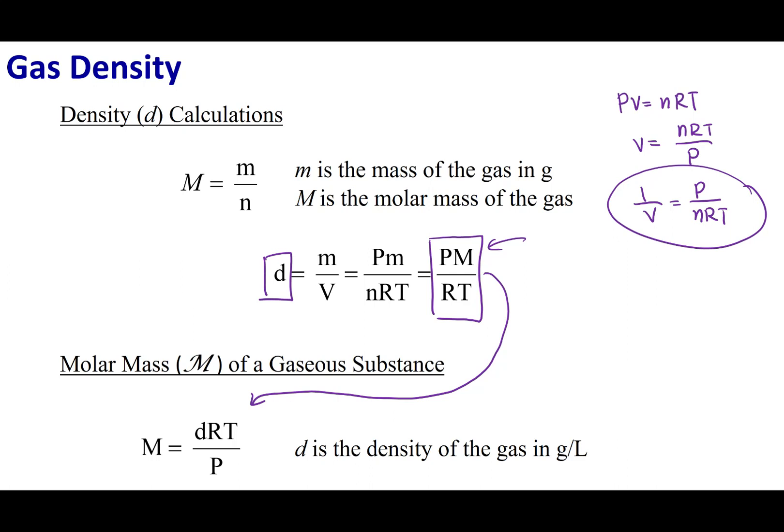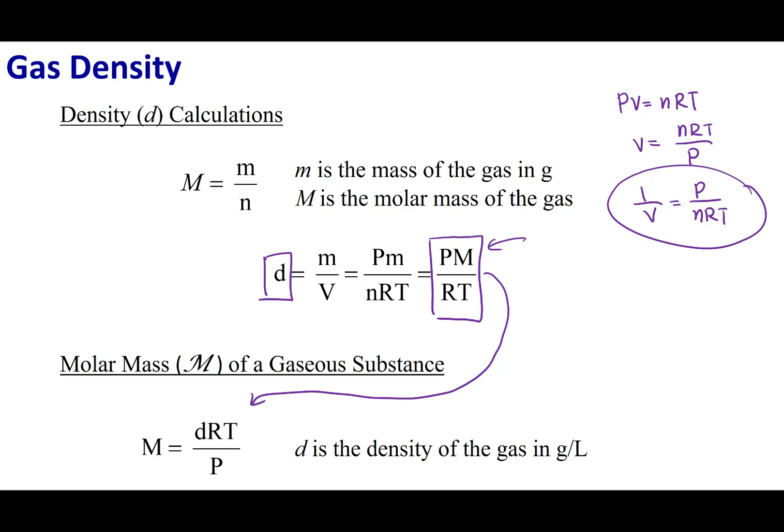What we see here is that density and molar mass are going to be directly proportional. That means when one goes up, the other is going to go up as well. Now this is going to be true so long as I hold the pressure and the temperature constant. So if I'm at STP, well that means my pressure and my temperature are going to be constant. And so that means that the higher my molar mass, the higher the density is going to be.